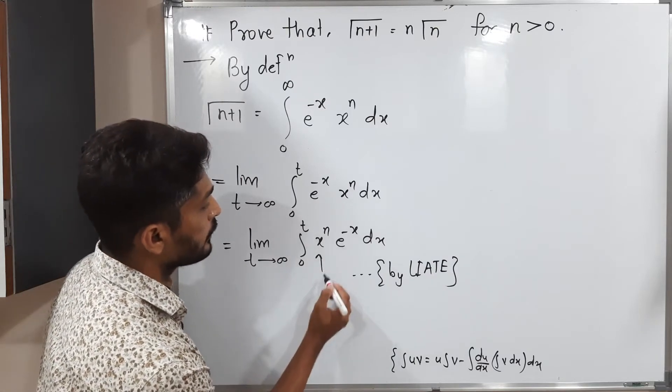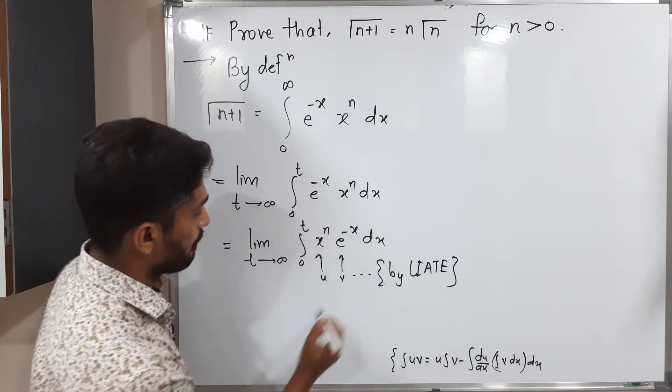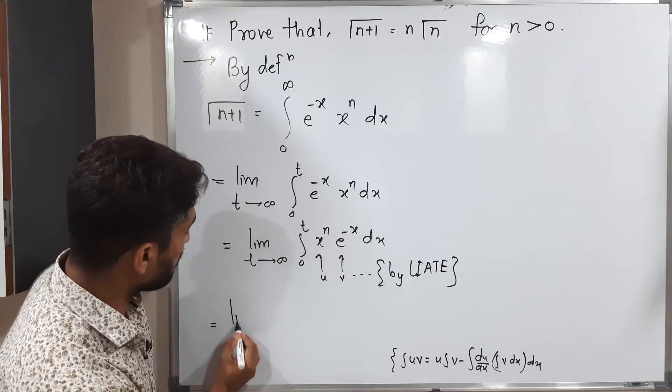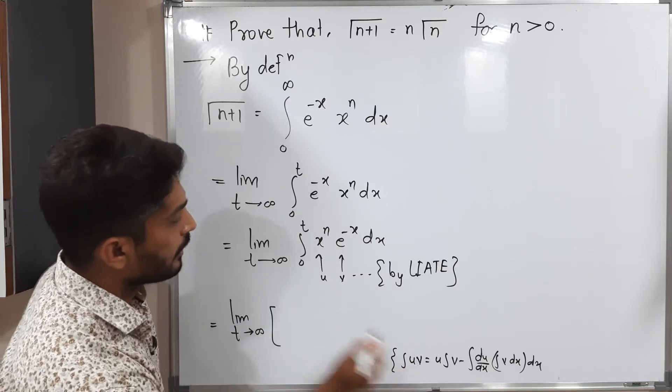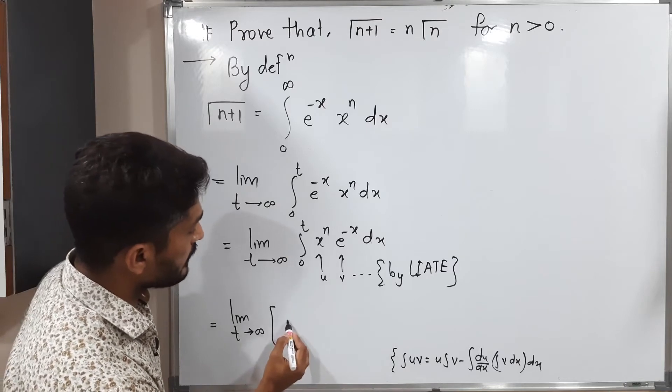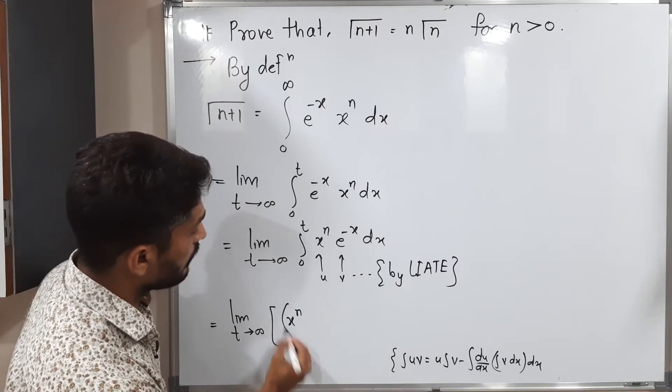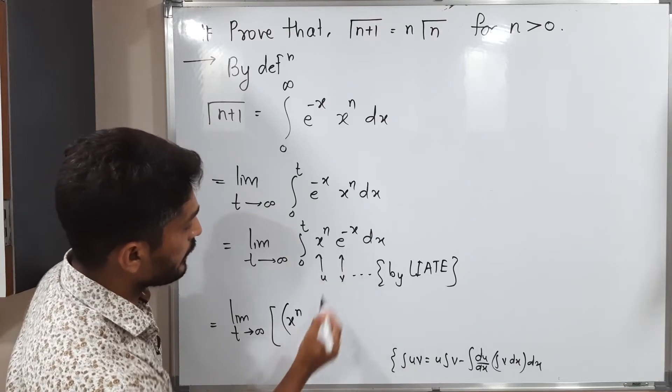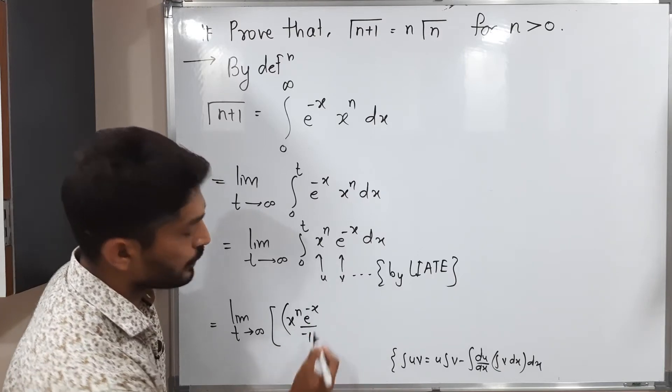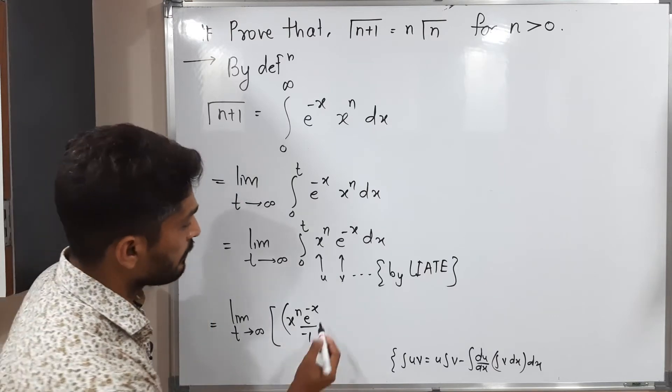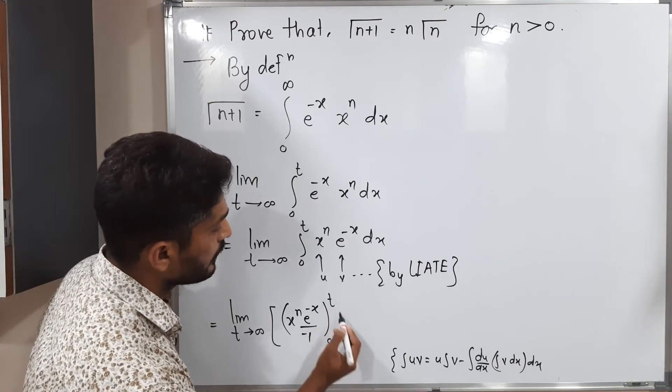So this formula I am going to use. What is my u? This is my u. And what is my v? This is my v. Let us use the formula: limit t tends to infinity. We have to write u as it is, x raised to n, and its integration e raised to minus x upon minus 1. The multiple of x is minus 1, so that's why I am writing at denominator 0 to t.